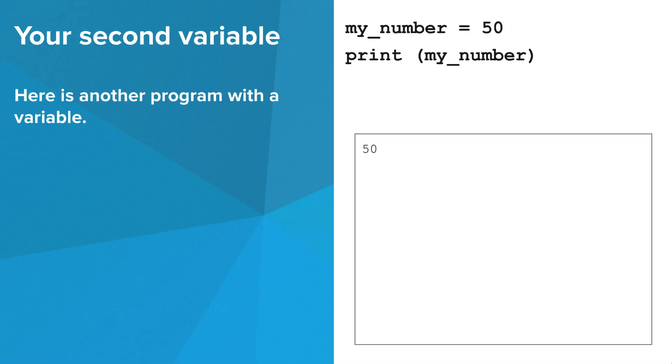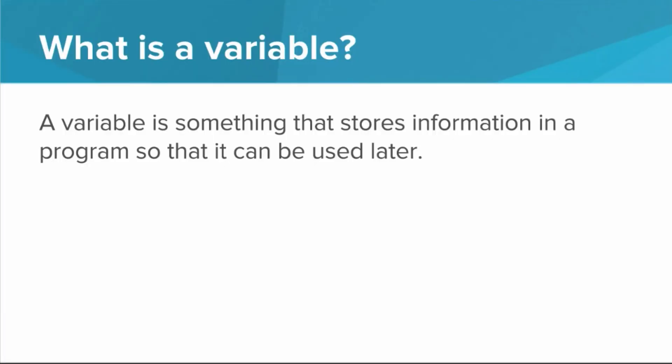Here's another program with a variable. The variable is called my number, and its value is the number 50. So what is a variable? A variable is something that stores information in a program so that it can be used later.